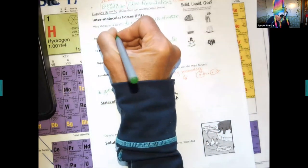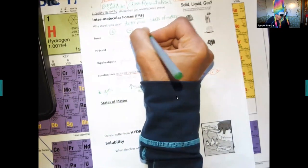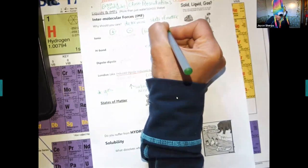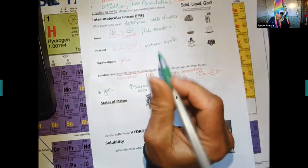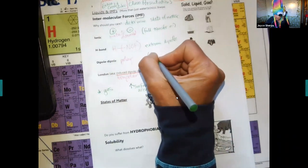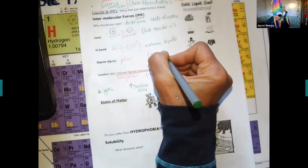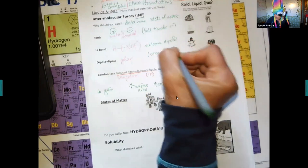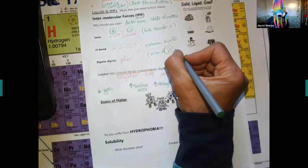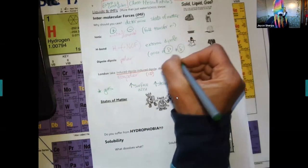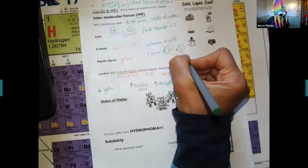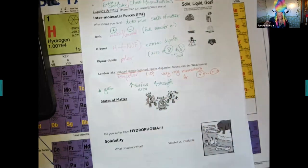There was somebody who asked a really good question, I think Christian, during office hours. It was why ionic is stronger than the dipole or H bond. Ionic, you have a true positive and a true negative. You fully transferred. There's a full transfer of the electron.